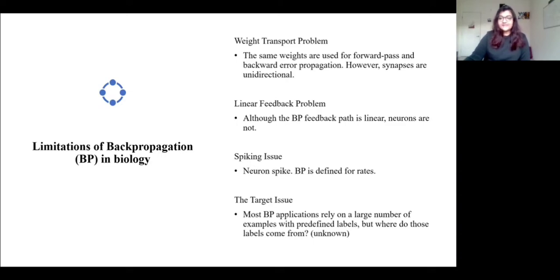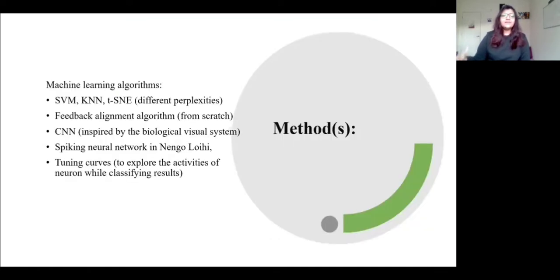So one of the most important families of the method is feedback alignment which uses distinct forward and feedback synaptic weights. So I have listed a couple of limitations of backpropagation in biology which is quite interesting and to begin with the experiment I'm working with different existing machine learning algorithms which are really powerful tools and then I created a feedback alignment algorithm from scratch and then compare its performance with CNN, SNN and tuning curves. Lastly to explore the activity of individual neurons.